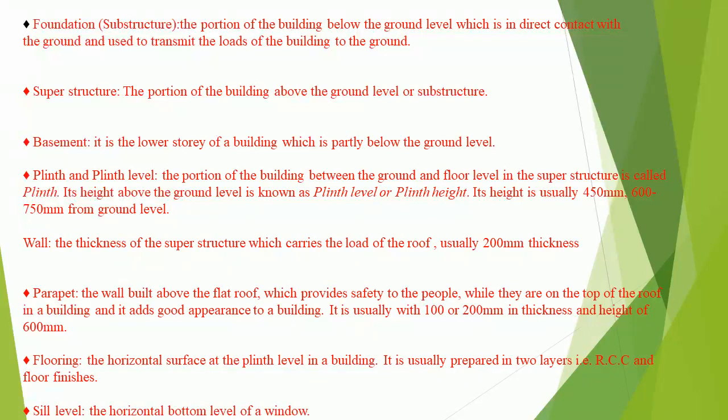Wall: the vertical element of the superstructure which carries the load of the roof, usually 200 mm in thickness. Parapet: the wall built above the flat roof, which provides safety to the people while they are on the top of the roof in a building, and it adds good appearance to a building. It is usually 100 or 200 mm in thickness and a height of 600 mm.